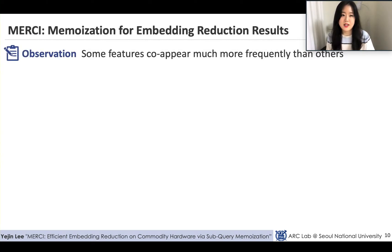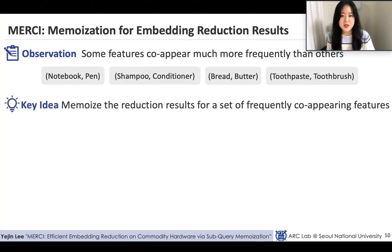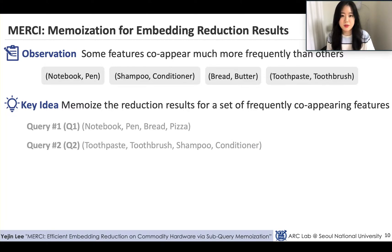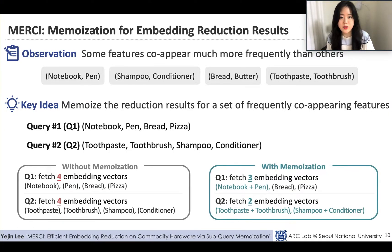One interesting observation is that some sets of features co-appear much more frequently than others. For example, item pairs such as notebook and pen, shampoo and conditioner, bread and butter, and toothpaste and toothbrush are likely to appear together in users' browsing history. Based on this observation, we suggest remembering the reduction results for sets of frequently co-appearing features. Without memoization, each query would require fetching four embedding vectors. On the other hand, if we memoize reduction results for certain combinations, queries require fewer fetches — reducing total memory accesses and improving throughput.